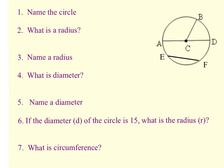Welcome to chapter 10. In this video we are going to introduce you to some vocabulary dealing with circles. The first thing we want to do is understand how to name a circle. You can see over here a picture of a circle, and when you name a circle you always use the center point. So we would call this circle C. You always name your circle based on the center point.